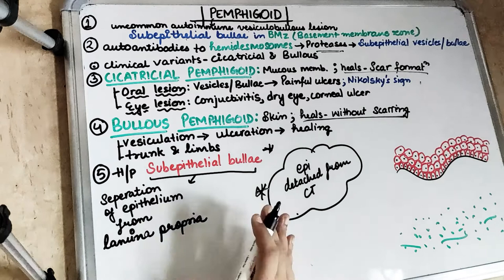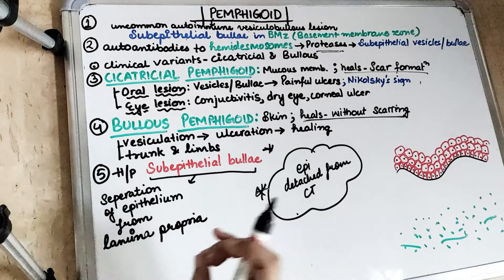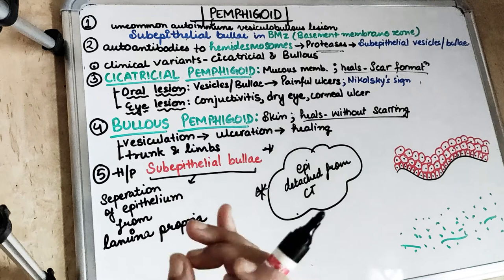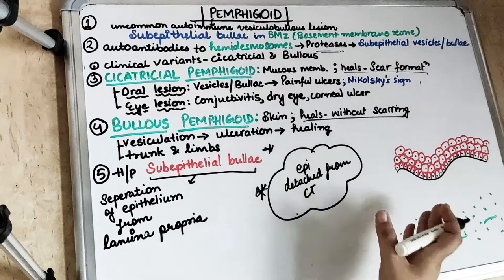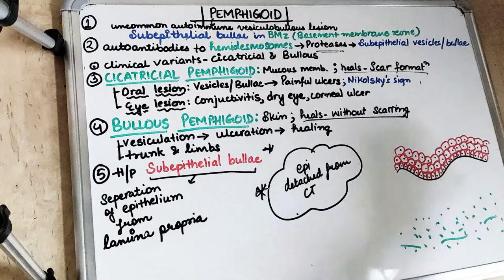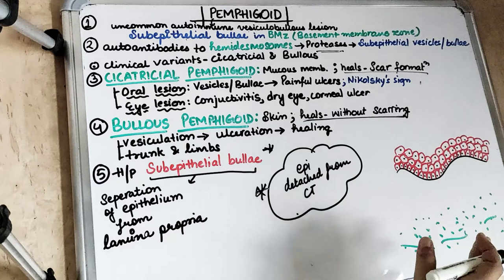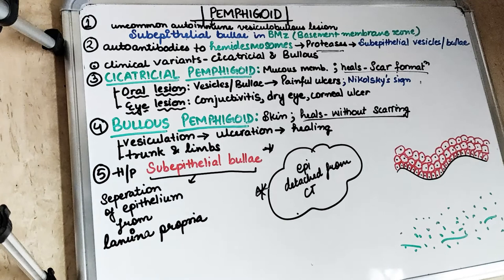On histopathological examination of pemphigoid, we see that the epithelium gets separated from the connective tissue, with a vesicle forming in between — this is called sub-epithelial bulla formation and is a characteristic feature of pemphigoid. There is separation of epithelium from the lamina propria. We do not see acantholysis or epithelial degenerative changes. There is simply a sub-epithelial split, and the bulla may sometimes contain neutrophils.